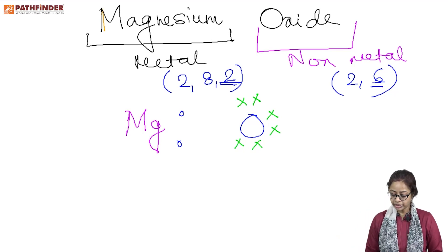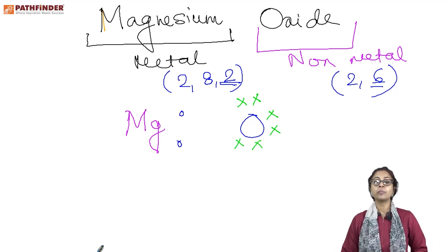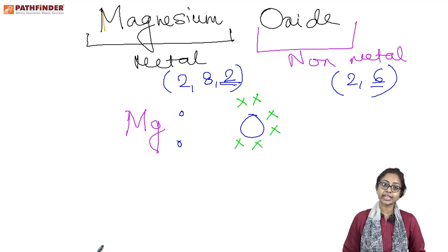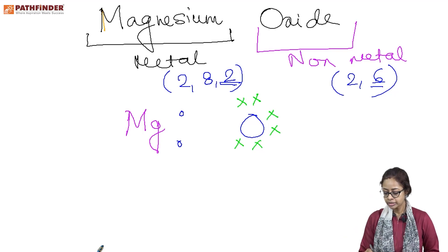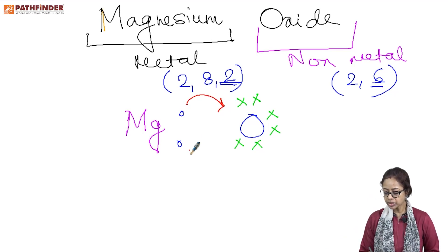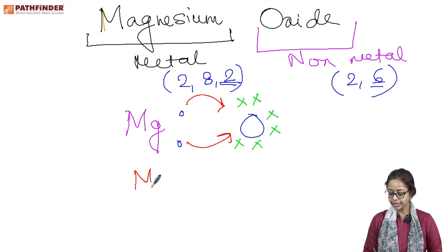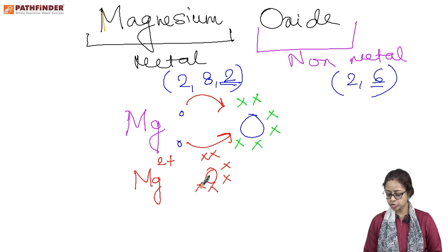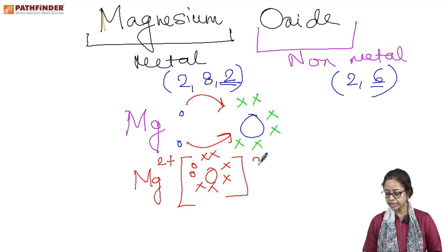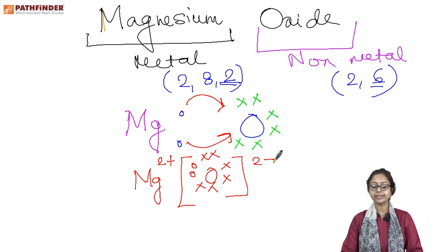For magnesium being the metal and oxygen being the non-metal, you must show the electrons with different representation. Both of them are not stable because both do not have 8 electrons in the valence shell. As a result, magnesium will transfer both its electrons to oxygen, thereby magnesium forms the cation Mg²⁺, and oxygen with its six original electrons takes two more from magnesium to become the anion O²⁻. That gives you the formation of magnesium oxide.